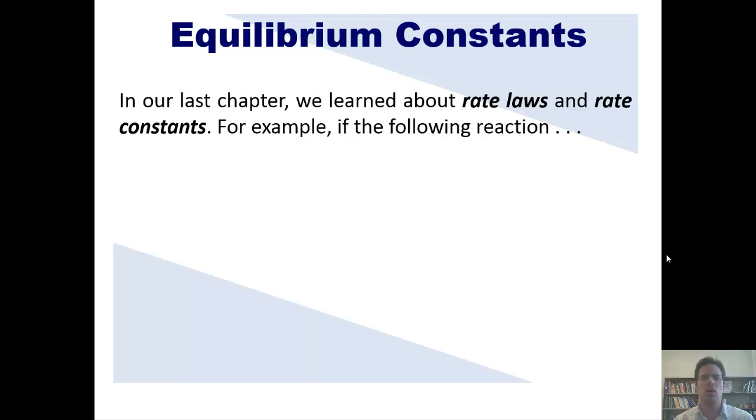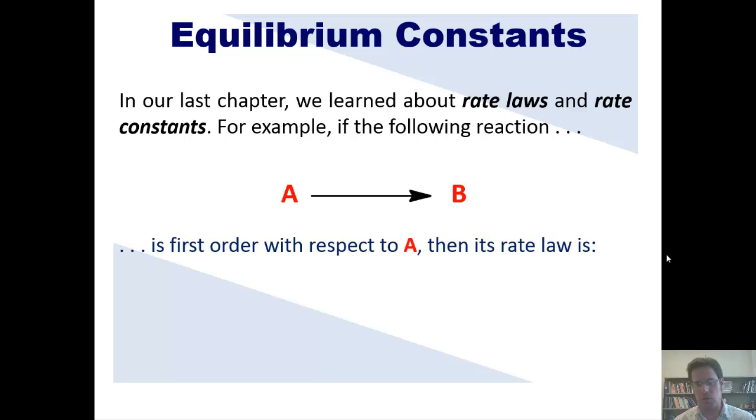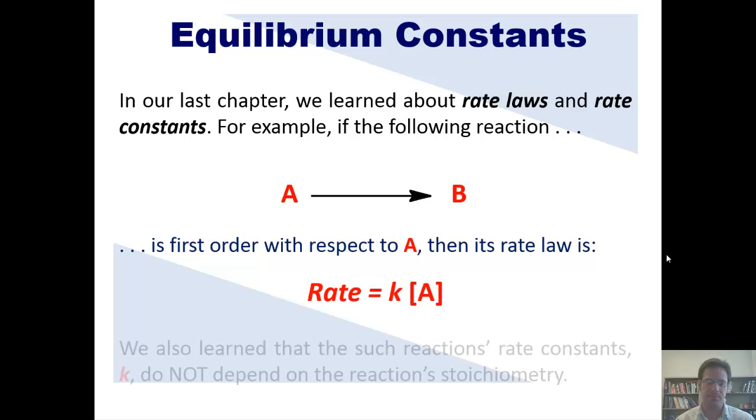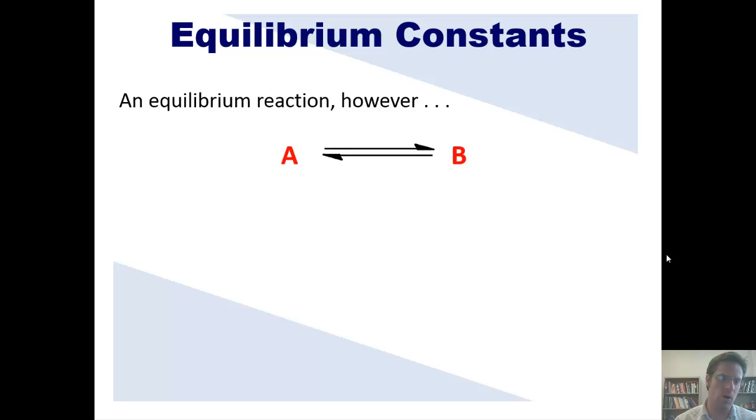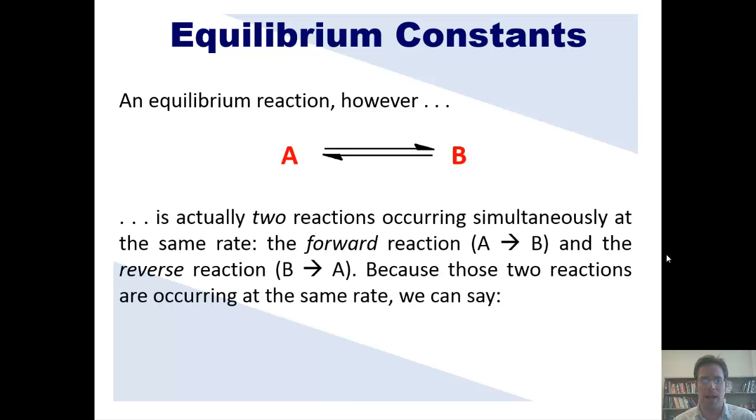So in our last chapter, to which I'll link here, we learned about rate laws and rate constants. For example, in this reaction, A converting to B, if it's first order with respect to A, then its rate law is that. We also learned that such reactions' rate constants, K, do not depend on the reaction's stoichiometry. An equilibrium reaction, however, which has a two-way arrow, is actually two reactions occurring simultaneously at the same rate: the forward reaction, A converting to B, and the reverse reaction, B converting back to A.